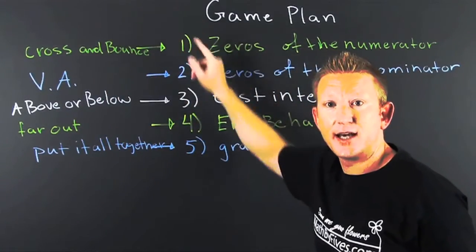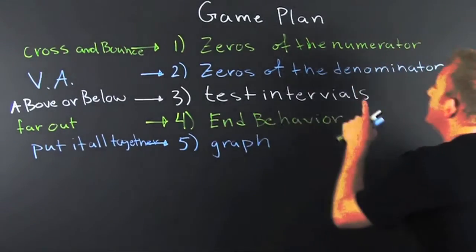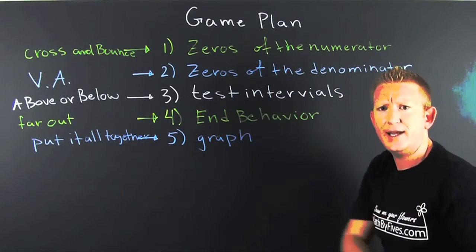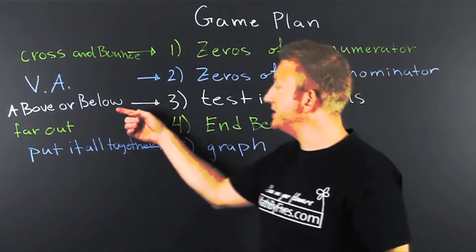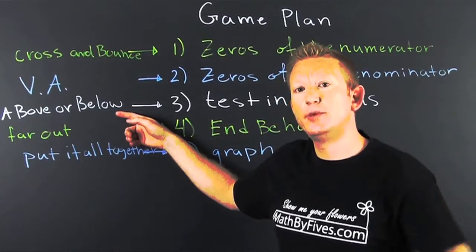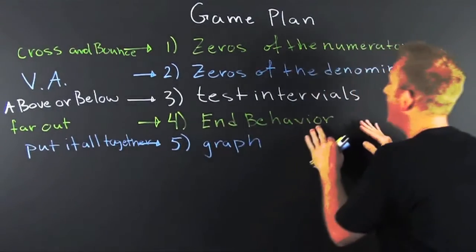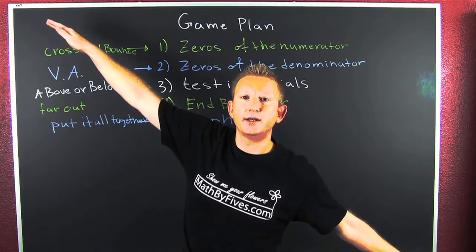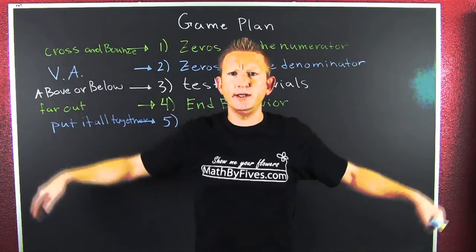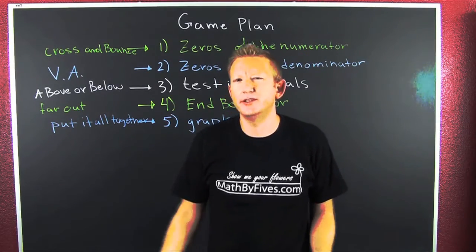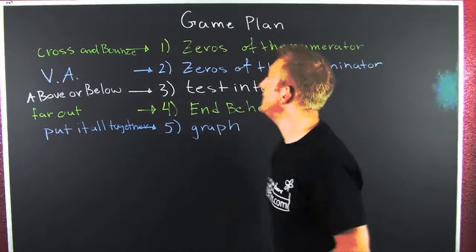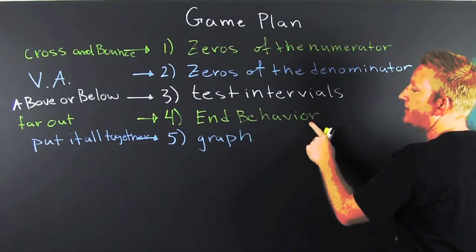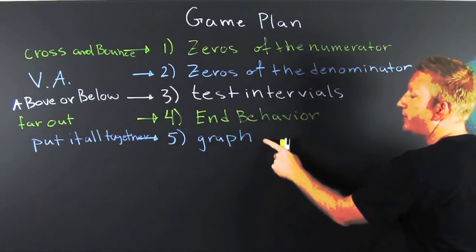Then you're going to test the intervals — put them on a number line and see whether it's positive or negative in those regions, because that tells you whether your graph is above or below the x-axis. Then you get the end behavior. So: zeros of the numerator, zeros of the denominator, test the intervals, end behavior, and then put it all together in one pretty picture.